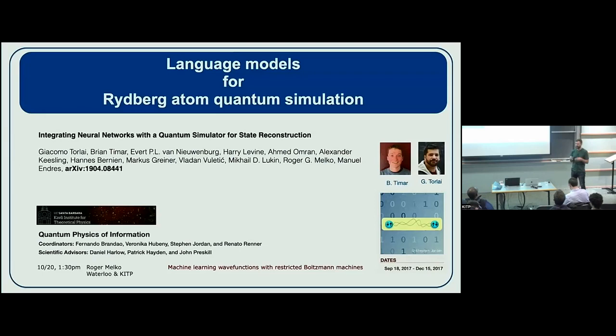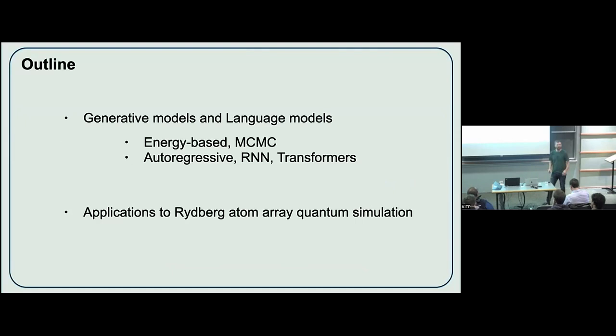I feel like I'm coming full circle by combining these two topics: language models and Rydberg atoms. We were talking back then about restricted Boltzmann machines and we've moved on to a different class of models. I want to start by giving a very brief outline intended for those who know basically nothing about machine learning and neural network architectures — generative models, language models, and how they're used as paradigms for quantum simulation. Then I'll go to applications to Rydberg atom arrays.